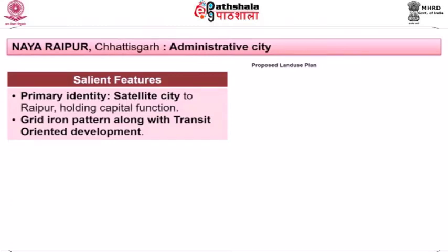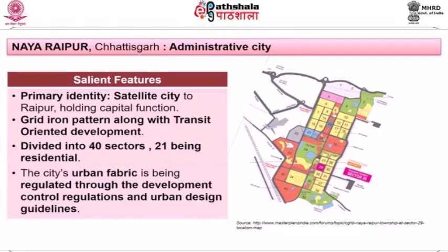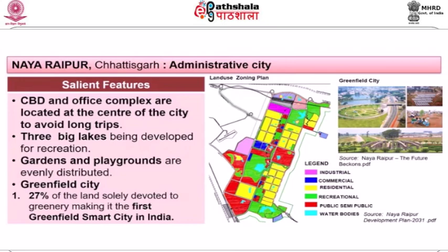The city was planned by Naya Raipur Development Authority as a satellite city to Raipur, holding capital functions. It was developed on a gridiron pattern along with transit-oriented development. There were 40 sectors, of which 21 were planned as residential sectors, and the city's urban fabric was regulated through development control regulations and urban design guidelines.